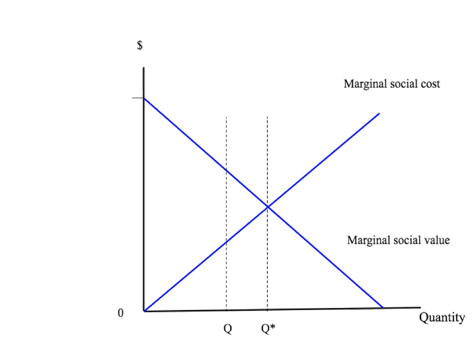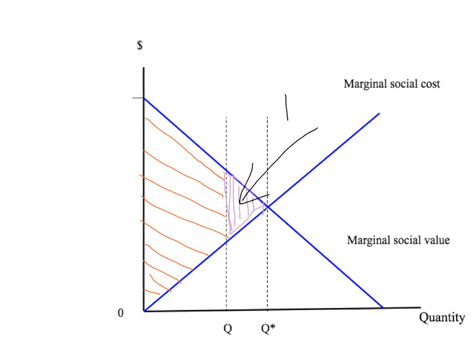But what if we stopped before we got to Q star — at some quantity Q less than Q star? The total gain to society from producing Q units is less than the big triangle. We've lost some social surplus compared to the optimum, and that loss is given by a triangle. By definition, this triangle is the deadweight loss of producing at level Q rather than the social optimum Q star.